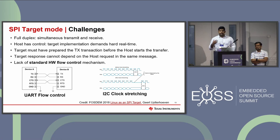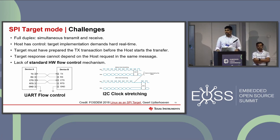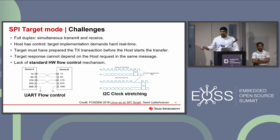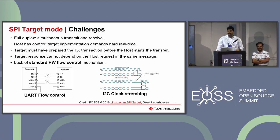Why do we discuss SPI target mode in particular? Unlike UART, which has ready-to-send/clear-to-send flow control signals, or I2C which has a similar mechanism, for SPI there is no standard flow control mechanism from host to target. Additionally, the transfer is full duplex — RX and TX packets are sent at the same time — and if running in SPI target mode on Linux, you cannot have a response for an incoming packet within the same packet itself, requiring more than one transfer for a proper response.